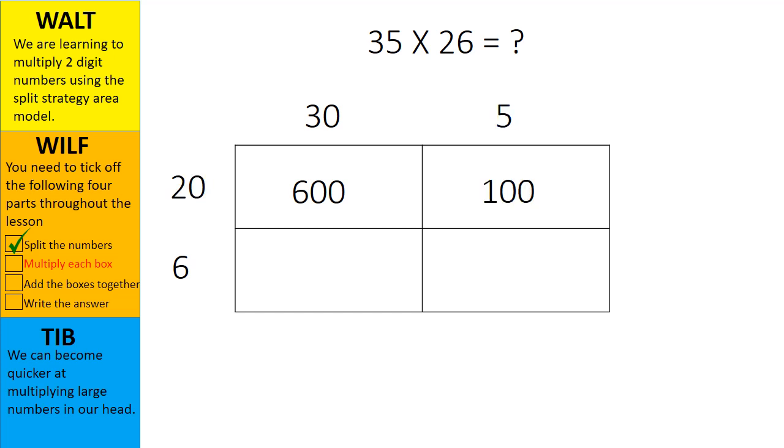Now we can move on to our third box. The numbers we need to multiply in this box are 6 multiplied by 30. To make it easier again we can cover up the zero and just multiply 6 by 3. The answer is 18 but we cannot forget to add our zero into the ones placeholder. This turns the number into 180. So 6 multiplied by 30 equals 180.